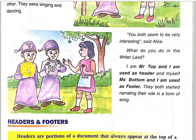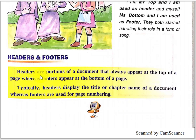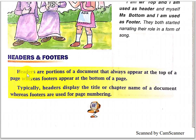He is Mr. Top and he is used as a header. And she is Miss Bottom and she is used as a footer. They both started narrating their role in the form of a song. Headers are portions of the document that always appear at the top of the page, whereas footers appear at the bottom of the page. Headers come on the head of the page — at the top — where you write your date, roll number, class, and topic. Footers are at the bottom of the page where you write the page number. Typically, headers display the title or chapter name of a document, whereas footers are used for page numbering.